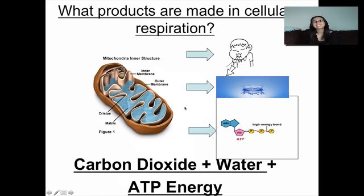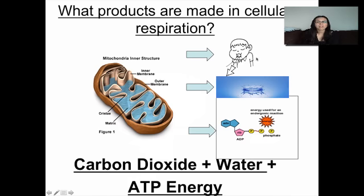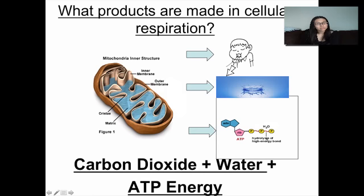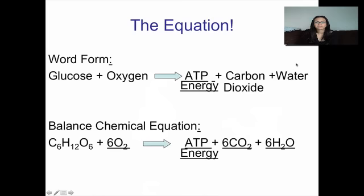The products made at the end of cellular respiration: carbon dioxide, which you breathe out; water; and ATP energy. Those are the three things made at the end of cellular respiration. With the equation, remember — on the left-hand side are the things you need, on the right-hand side are the things that are made. You need glucose and oxygen; you make carbon dioxide, water, and ATP energy.